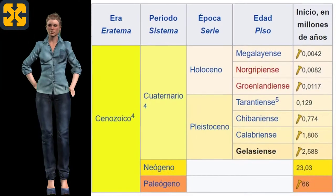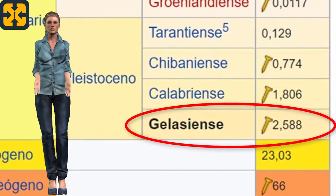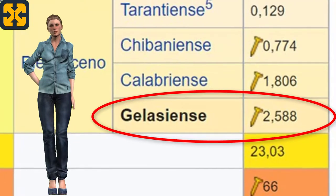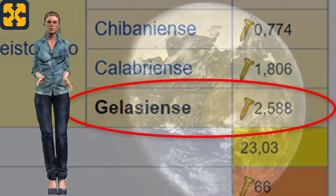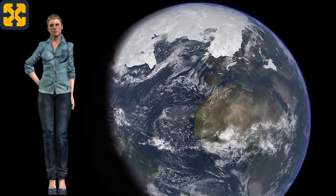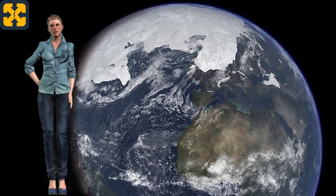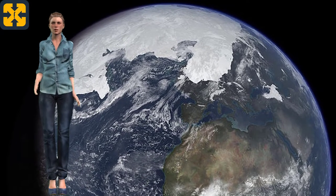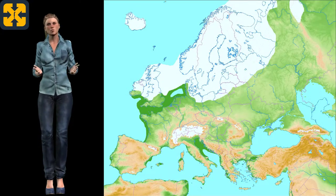On the other hand, the Gelasian period begins 2.5 million years ago and ends 1.816 million years ago. The Pleistocene climate was a succession of glacial cycles, meaning there were periods of glaciations followed by others in which temperatures increased, known as interglacial periods. This continued throughout the Pleistocene until the last glaciation ended.